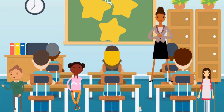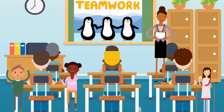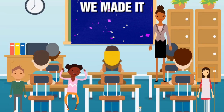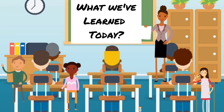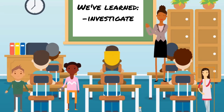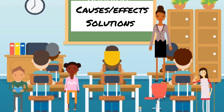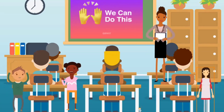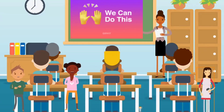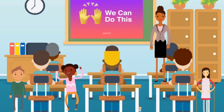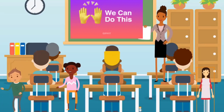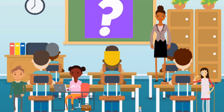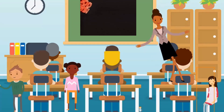Well done — great job as investigators! Now we know that by thinking carefully, we can help solve environmental problems. Today, we learned how to investigate environmental problems: we looked at the causes, the effects, and ways to solve them. Environmental problems might seem big, but if we work together, we can help make things better. What's one thing you can do at home or in school to help the environment? Can you share with the class?